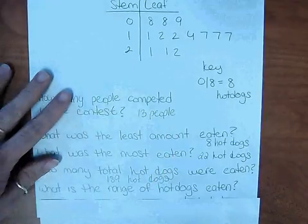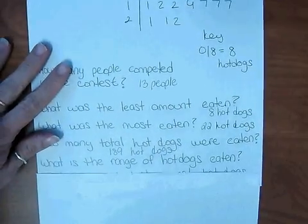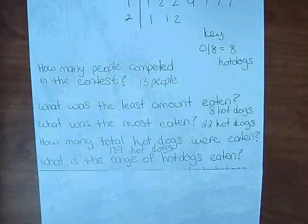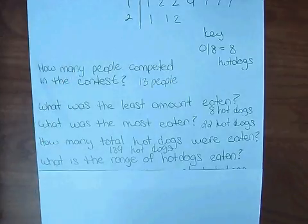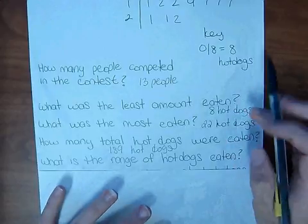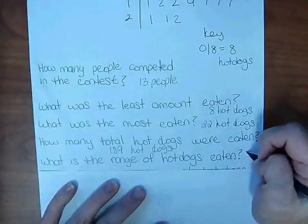What is the range? Well, range is the highest minus the lowest. The highest is 22 and the lowest amount eaten is 8, so the range is 14.